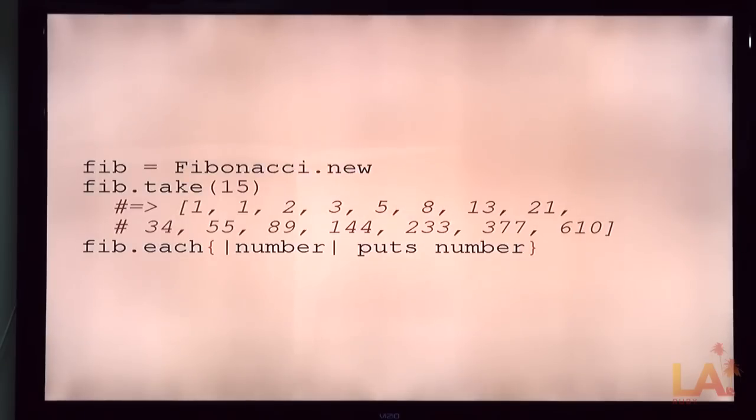Next step, we include enumerable. That's it. Now, we can create a new Fibonacci series and say, take 15 of it. It's just the first 15 items in the list. So, there's the first 15 Fibonacci series. And this will never return because the Fibonacci series doesn't, right?